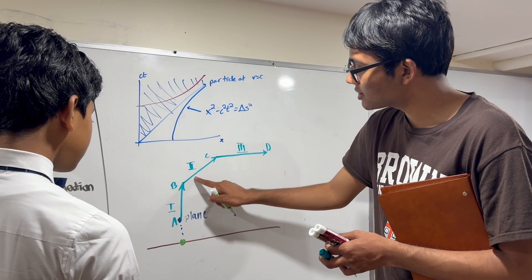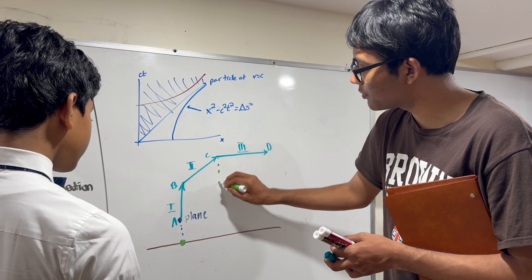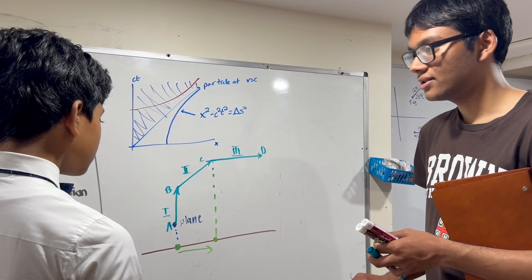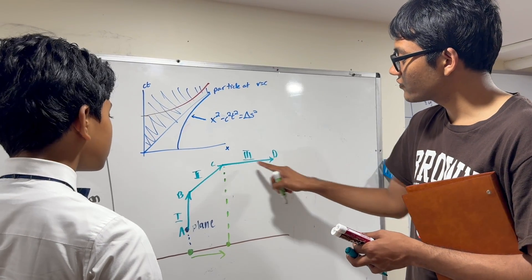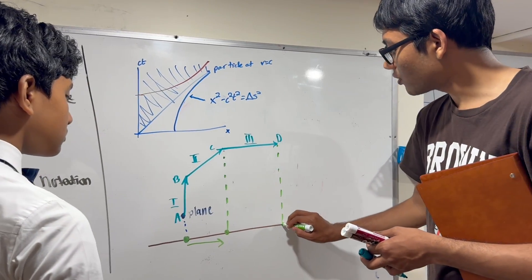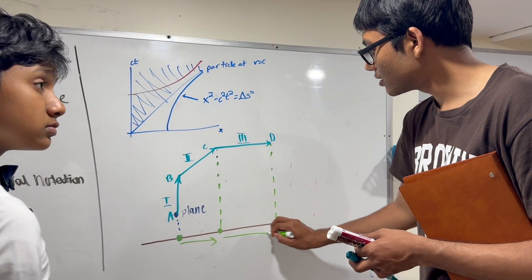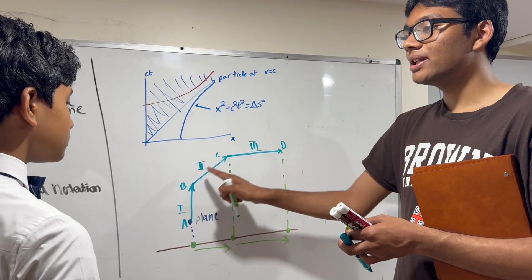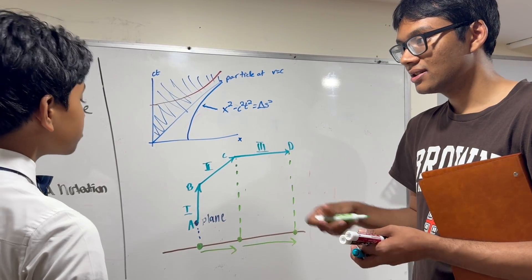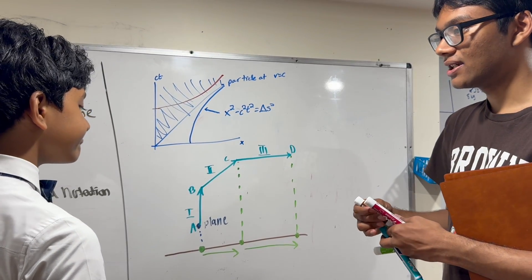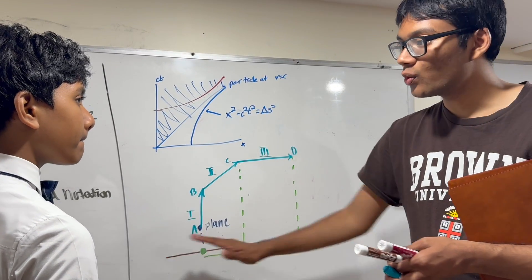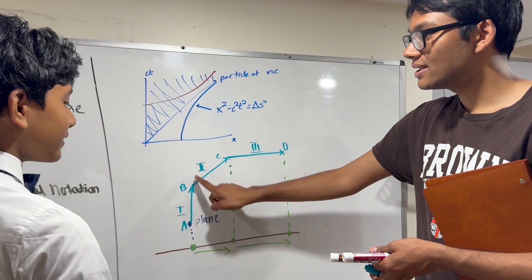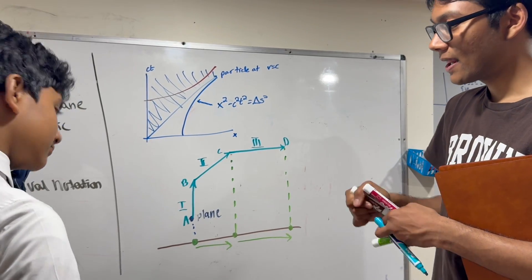But when the plane starts moving from point B to point C, the shadow people start suddenly seeing the plane is moving. And then when the plane moves from C to D, the shadow people think the plane moved even faster. So the shadow people think that the plane is accelerating even though the plane is going at constant velocity. That's the first thing. But the shadow people live in 1D. They don't know that the plane is existing in a higher dimension.